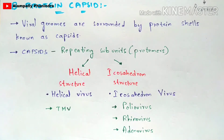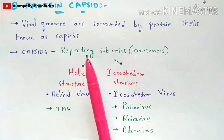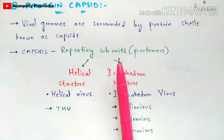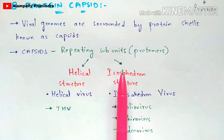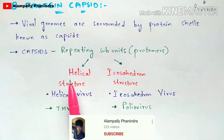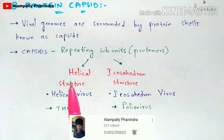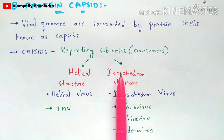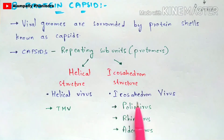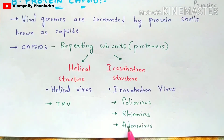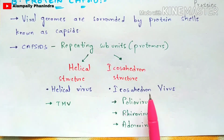Capsids consist of repeating polymeric subunits called protomers. Based on these subunits, virus structure is classified into two forms: helical and icosahedral. Viruses with helical capsids are called helical viruses — for example, tobacco mosaic virus (TMV). Viruses with icosahedral capsids include poliovirus, rhinovirus, and adenovirus.